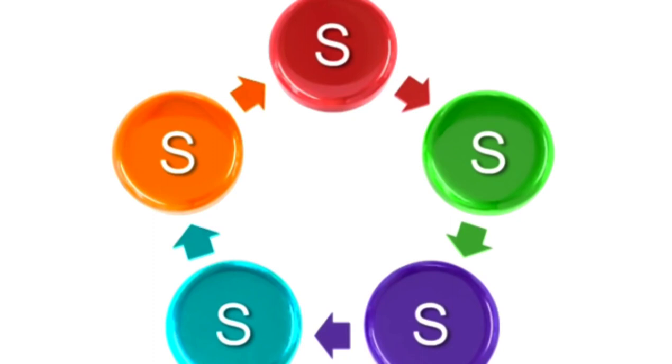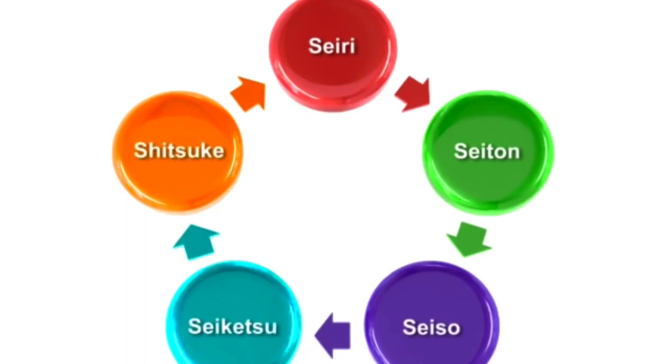From its origins in Japan, the five S's are Seili, Seiton, Seiso, Seiketsu, and Shitsuka.